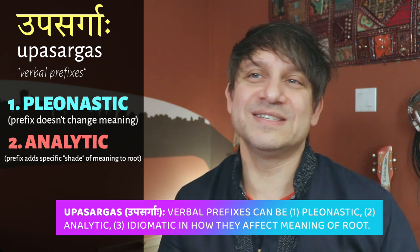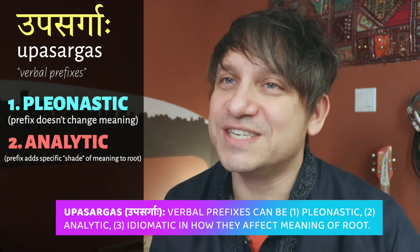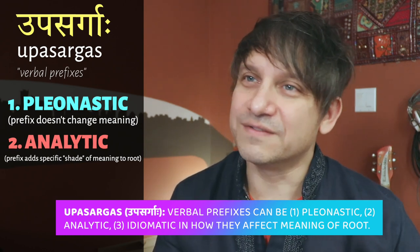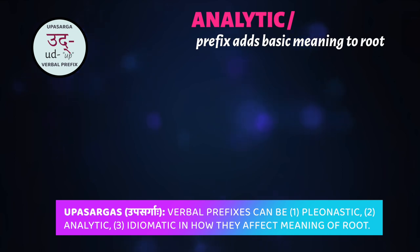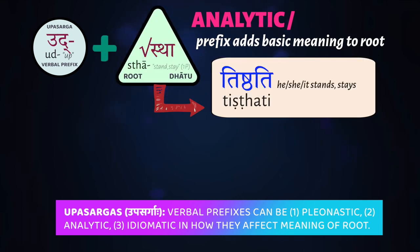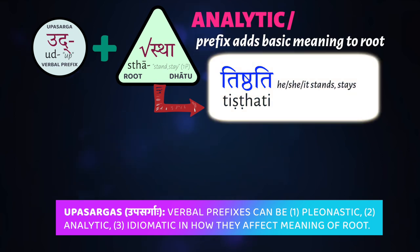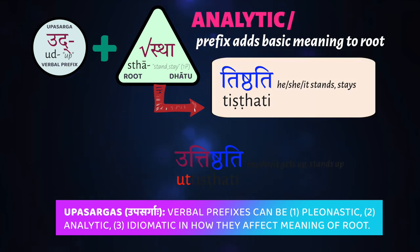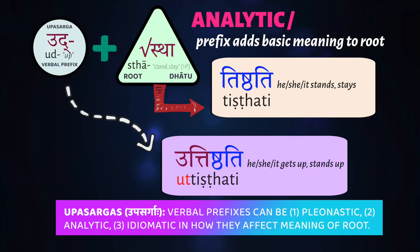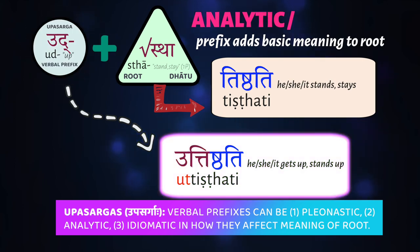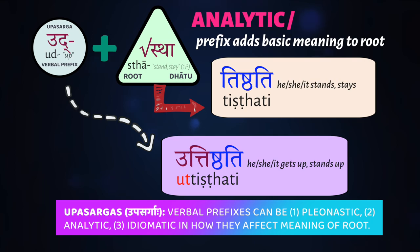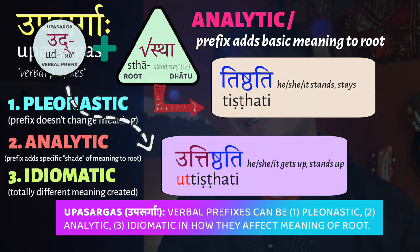The second thing upasargas do is add their own specific shade of meaning to the verb root. One example is the prefix ud, which means 'up' — it has the directional idea of upwards. The root sthā means to stand or stay, conjugated as tiṣṭhati, 'he/she/it stands.' If you add ud to the root sthā, it becomes ut-tiṣṭhati, meaning 'he/she/it gets up, stands up, wakes up.'